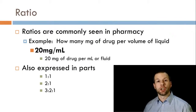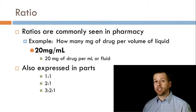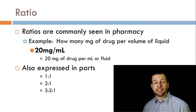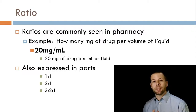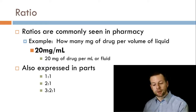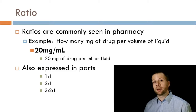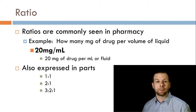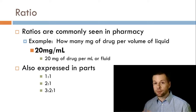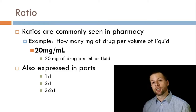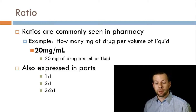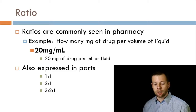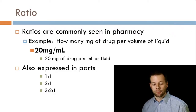Let's talk about just what a ratio is. Ratios are commonly seen in a pharmacy — you're going to see some amount of something per some other amount of something. For example, 20 milligrams per milliliter. That's how many milligrams of drug there are going to be in a milliliter of solution — 20 milligrams of drug per milliliter of fluid.